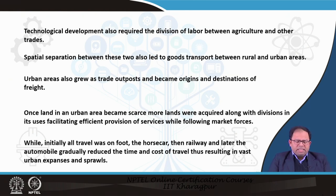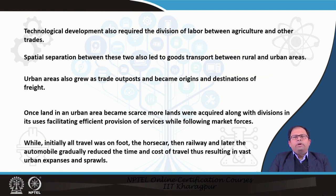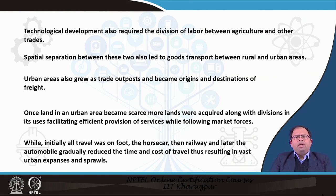Once this kind of development happened, cities gradually grew and land became scarce in most urban areas, requiring the city to expand. The initial settlement started growing and expanding, requiring acquisition of more land from surrounding areas. Agricultural land started getting transformed into urban areas, and then division of this land for different uses took place — certain lands were reserved for residential areas, certain for industrial areas, and so on. This was driven by market forces, which guided the amount of land required, the price of land, and the location of land.